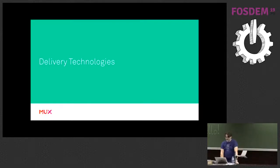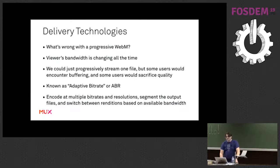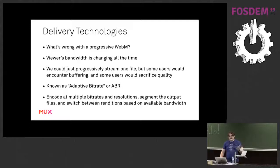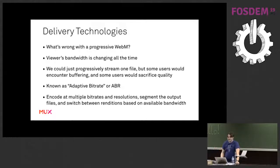Delivery technology is one of the most important pieces. What's wrong with just progressive WebM? It'll actually work - it'll get you there. But we want to give a great experience to users; we don't just want to give them a file and hope it works. We could pick a one-megabit file and serve it to every single user, but some users are going to get buffering. On a train my bandwidth was going up and down - hotel rooms, cheap routers with no quality of service, and three kids next door playing video games.